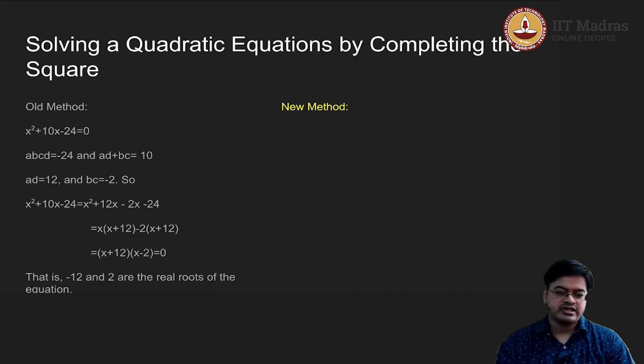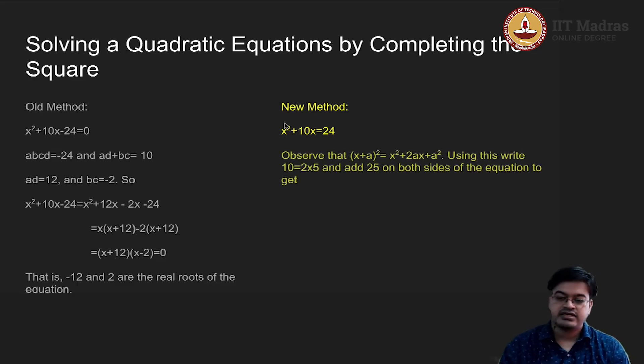From that particular thought comes the new method which is the method of completing the square. What that person did is rewrite this expression into this form: x² + 10x = 24. Now, the next question that person asked is if I look at this x² + 10x, do I know something that will make this particular expression as a complete square? What do I mean by complete square? Complete square means x + a the whole square.